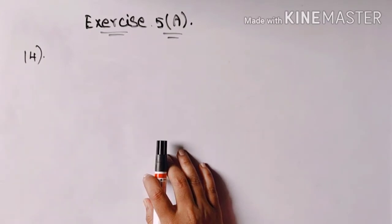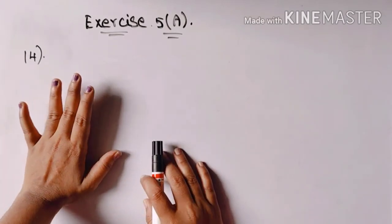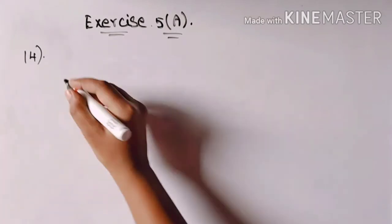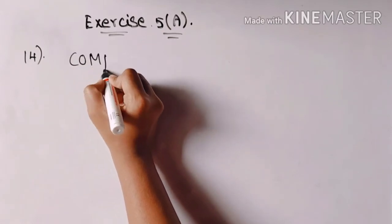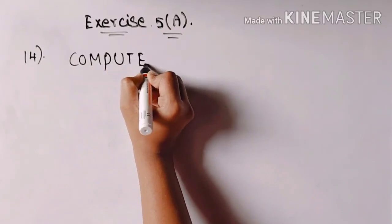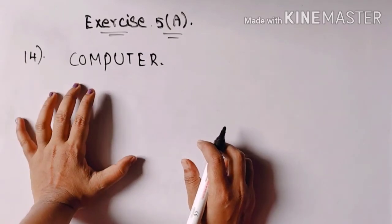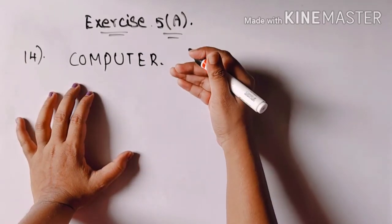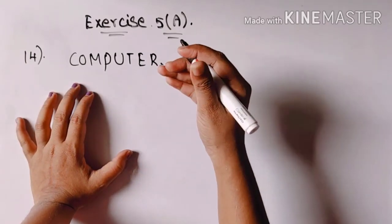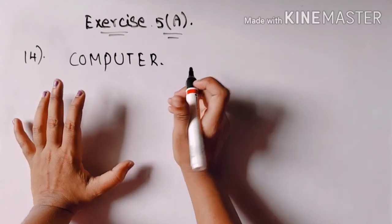The 14th question is: find the number of ways the letters of the word COMPUTER can be rearranged. This is from the ICI module. So, COMPUTER is the word. The question asks: how do we rearrange the letters of the word COMPUTER?